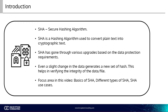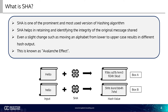There are several variations in SHA, such as SHA, SHA-1, or SHA-2. SHA is one of the most prominent and widely used variations of hashing algorithms. SHA helps in retaining and identifying the integrity of the original message shared. As shown in the video, we have a high-level view of how the SHA algorithm works. The initial message is hashed with SHA-1, resulting in the hash digest shown in box A.